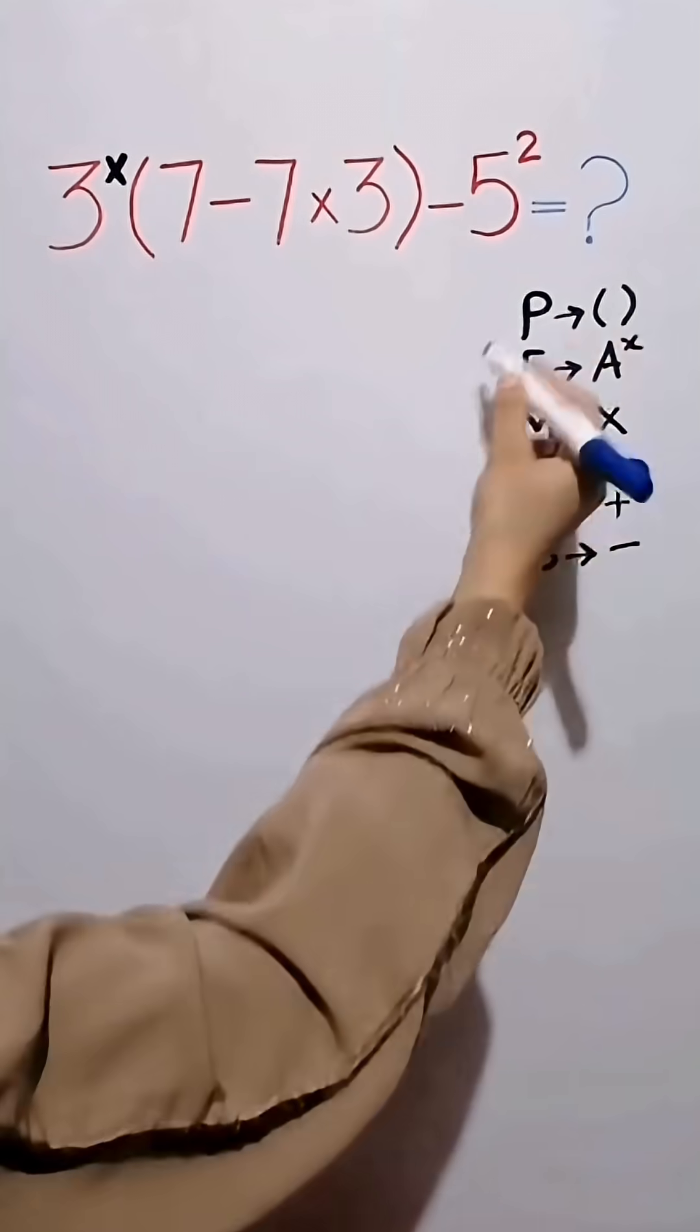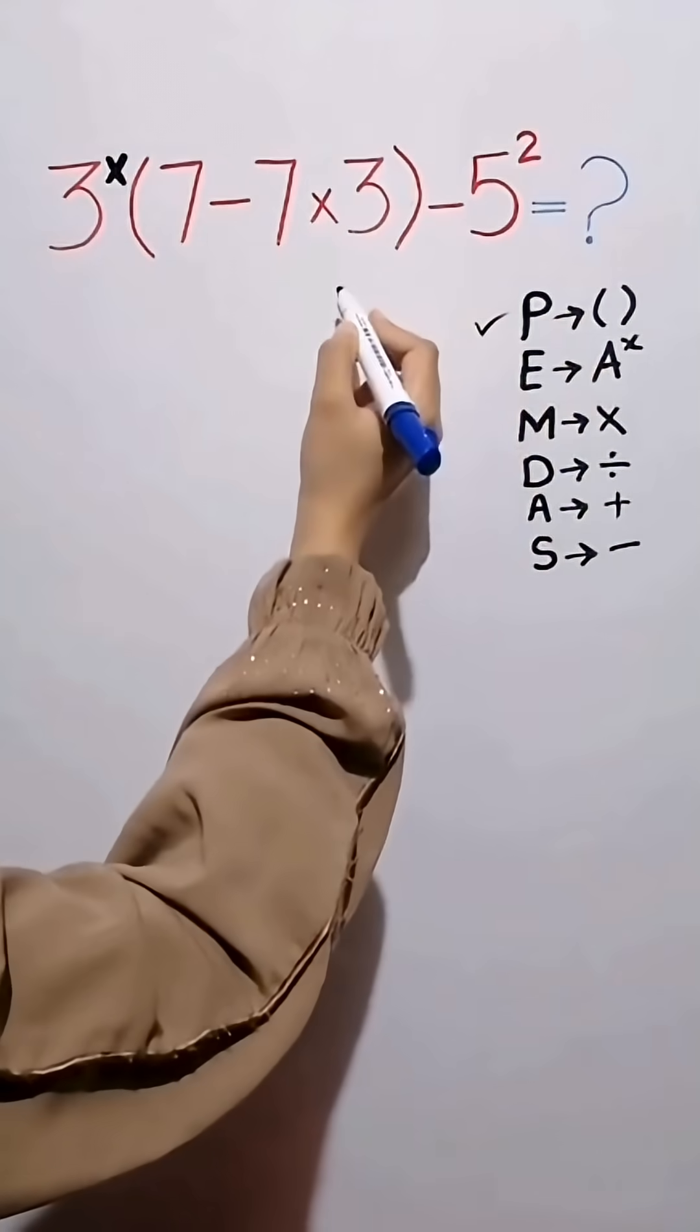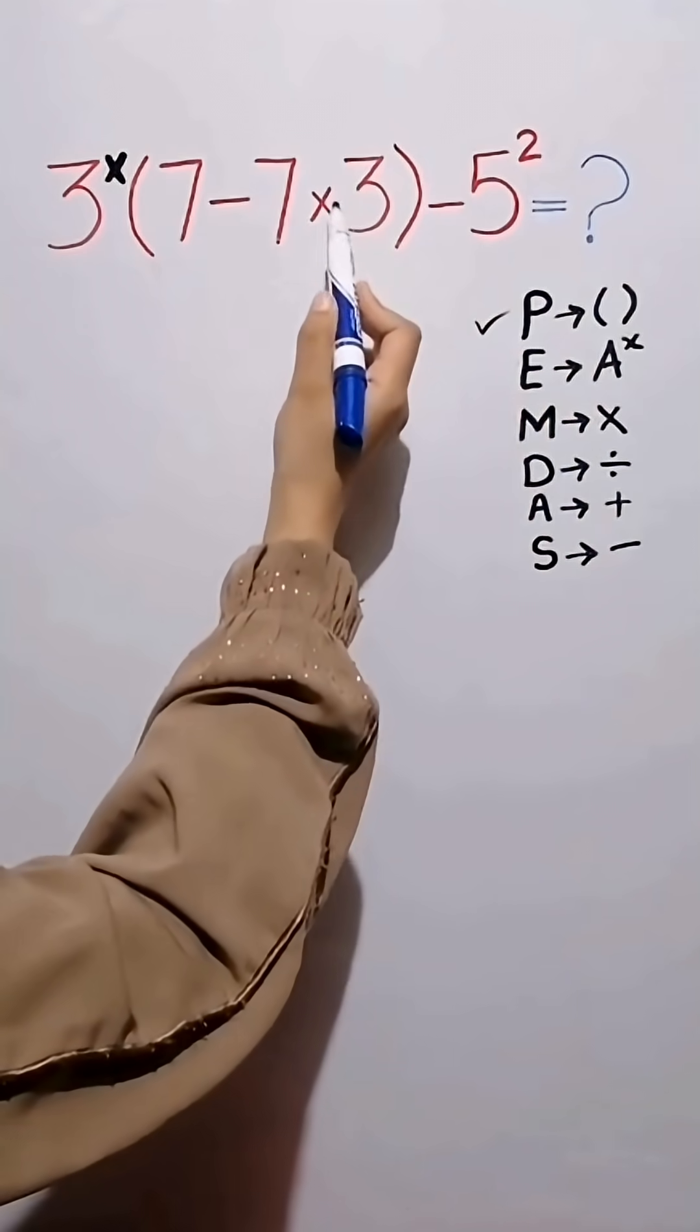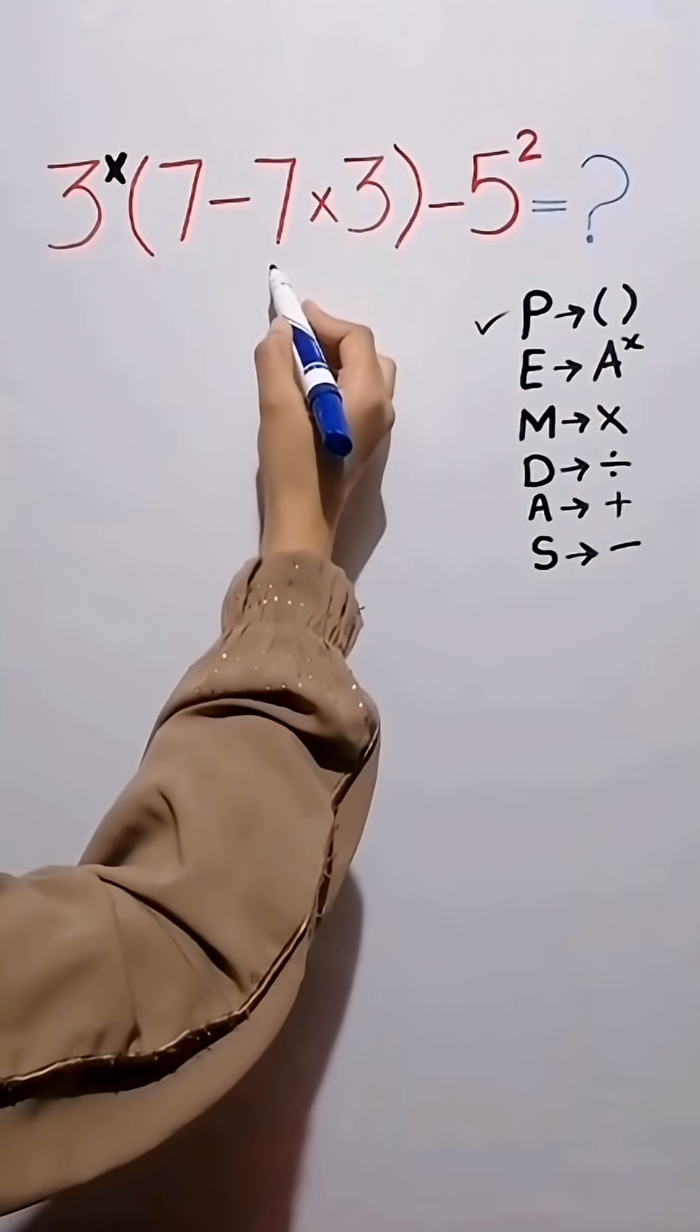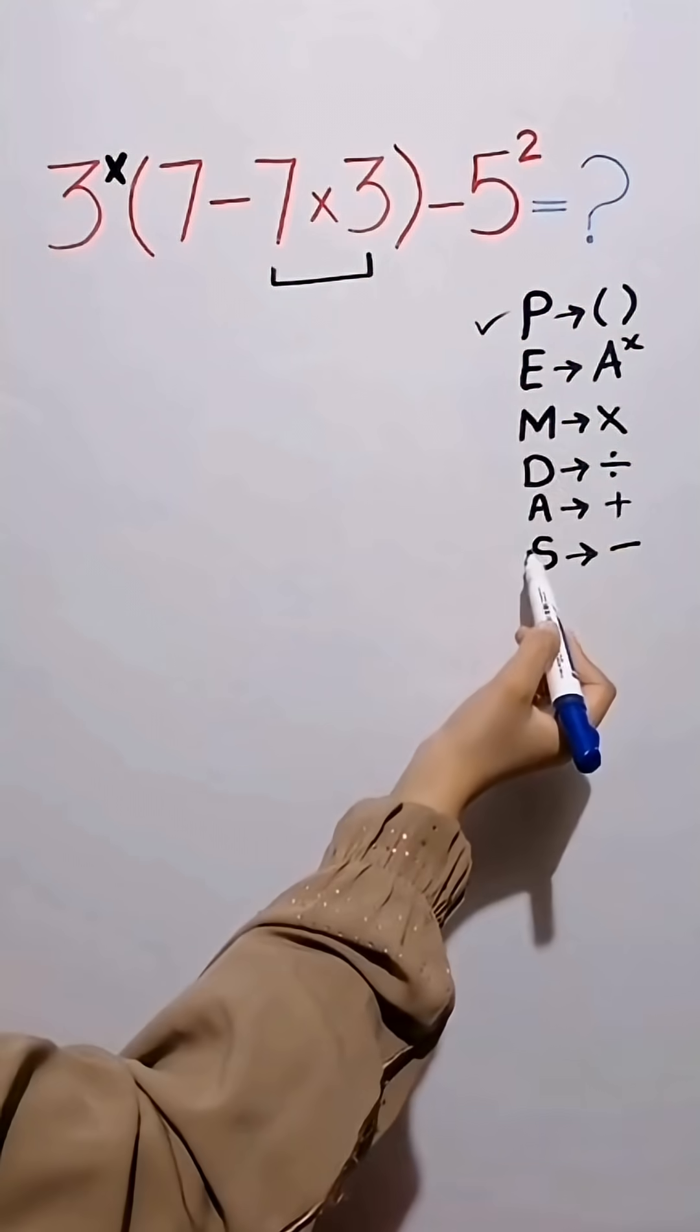According to the PEMDAS rule, first we simplify this parenthesis. Inside this parenthesis we have subtraction and multiplication. First we do this multiplication because multiplication has higher priority than subtraction.